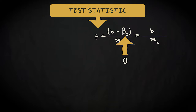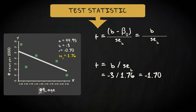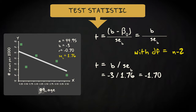For cat age in our example, the standard error is 1.76. To get the T value, we divide minus 3 by 1.76, which equals minus 1.70. To compute or look up the P value, we need to know the degrees of freedom. These equal n minus 2. We lose two degrees of freedom because we have to estimate two population parameters: the intercept and the slope.